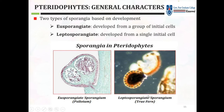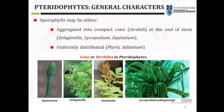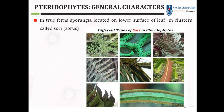Sporophylls may either be aggregated into compact cones — forming strobili — or uniformly distributed, depending on the type of Tracheophyte. In true ferns, sporangia are located on the lower surfaces of the leaf in clusters called sori (singular: sorus).